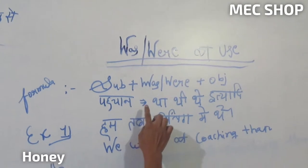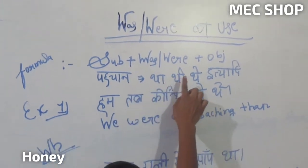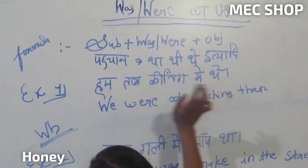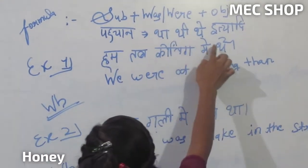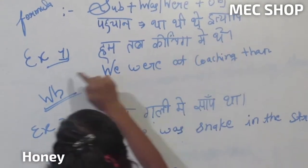Subject plus was/were plus object. Past tense: tha, thi, thay, etc.